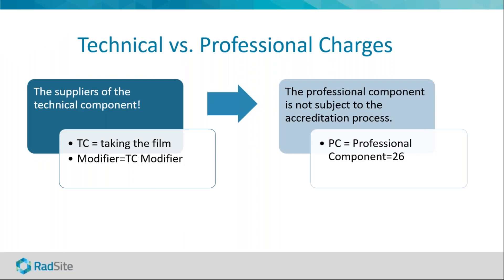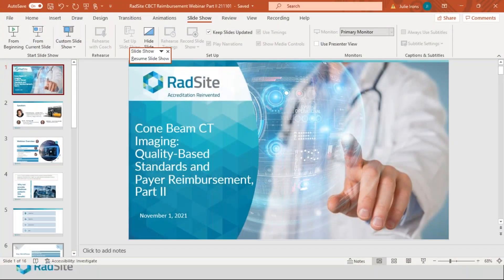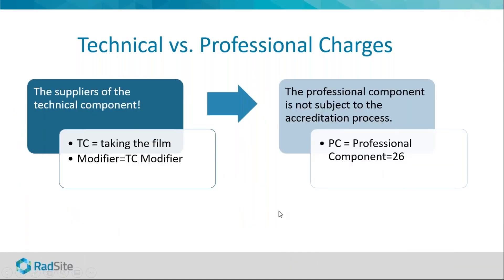When you're taking and reading the imaging that you are providing on your own patient — you're taking the technical component and you're reading it for your own patient — you do not have to use a modifier. If you're only taking it and completely sending it out to be read, that's the professional component. The modifier for taking the scan is TC if you're only taking it. If you're taking it and reading it for your patient, no modifier.